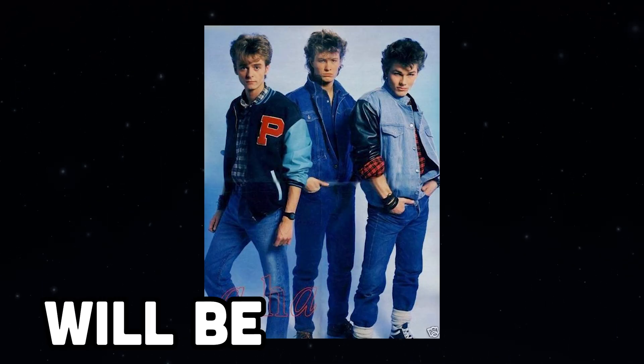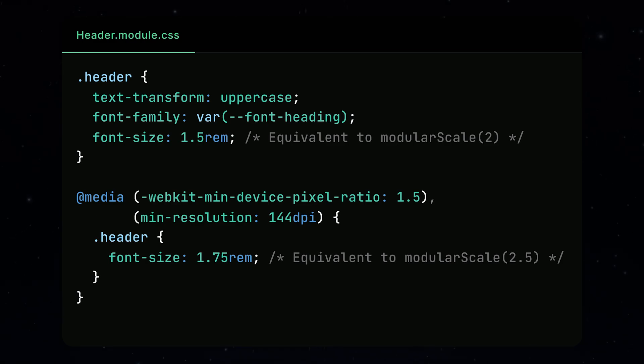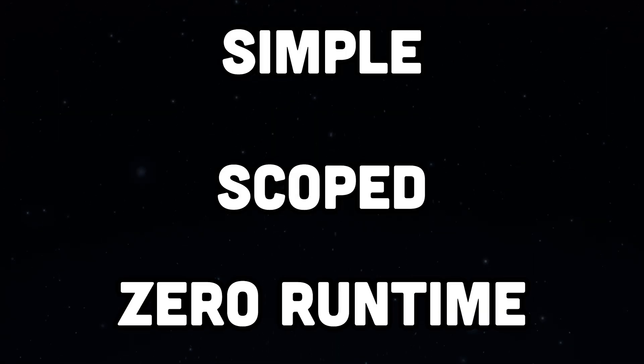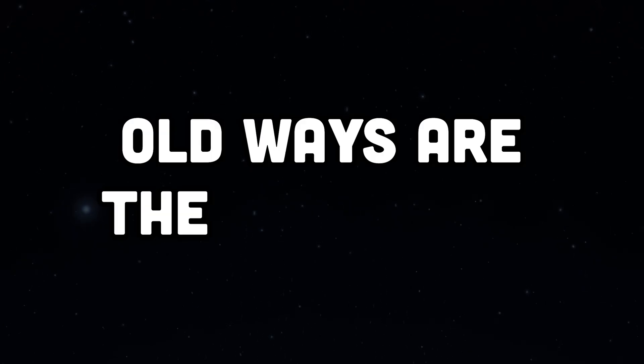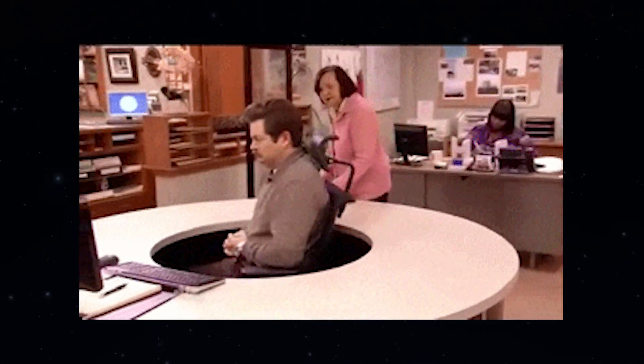Web development is like fashion though — if you wait long enough, your dad's approach to CSS will be cool again. Some traditional approaches are making a strong comeback. CSS Modules never actually left, but they're getting more love now that runtime CSS-in-JS is falling out of favor. Simple, scoped, and zero runtime overhead. Sometimes the old ways are the best ways. Maybe even ignore all of the noise and just continue writing CSS files with your headphones on as each new trend comes and goes.